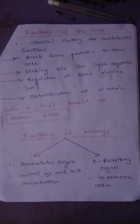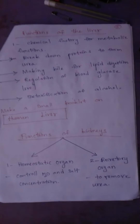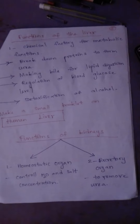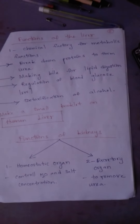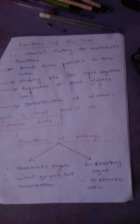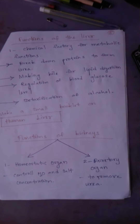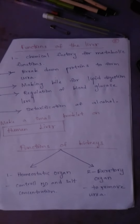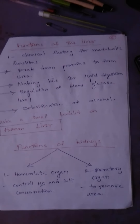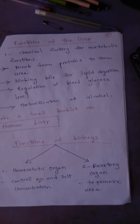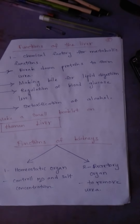There are two major functions of the kidneys. Number one is acting as a homeostatic organ to control water and salt concentration. The other is the excretory function to remove urea from the body.